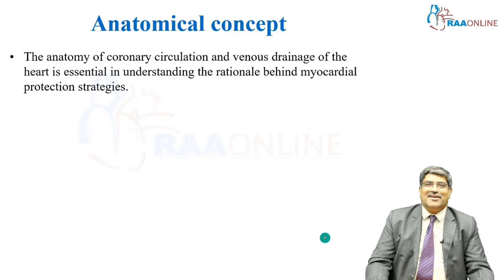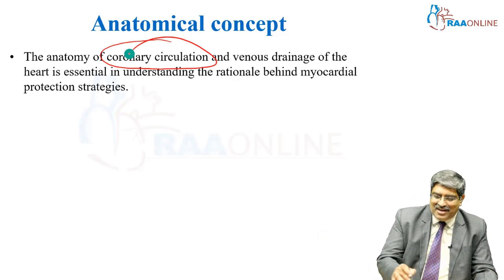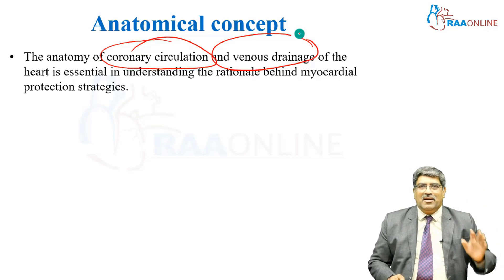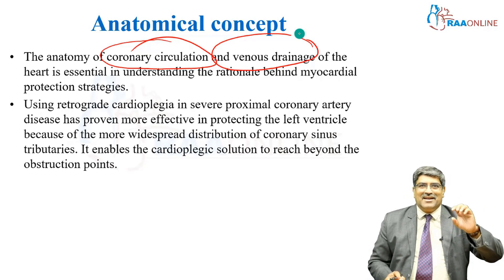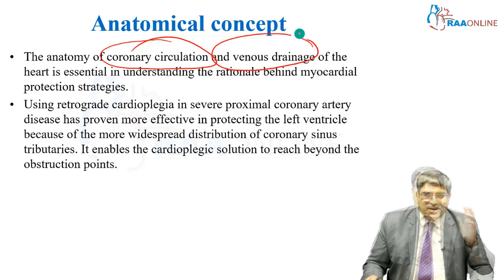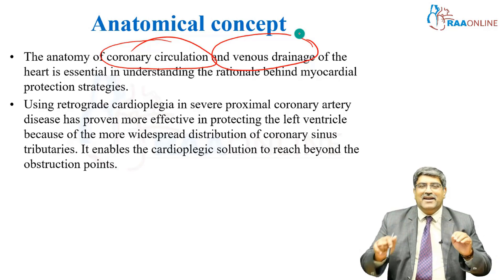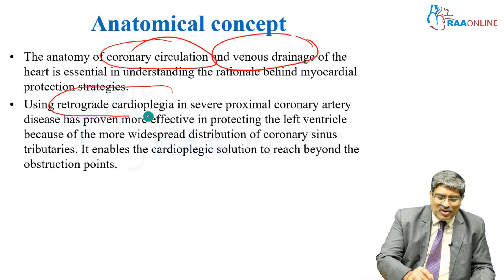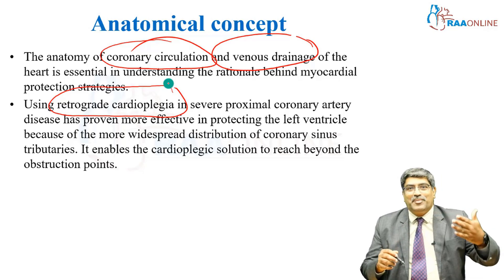Coming to the anatomical concept of where cardioplegia is delivered, the coronary arterial and venous drainage of the heart is very important. Normally, cardioplegia is given antegrade or retrograde. Usually it is given into the aortic root, where it flows into the coronary arteries and causes cardioplegic arrest. However, if the patient has coronary artery disease, antegrade delivery may not reach the myocardium due to obstruction. In those cases, retrograde cardioplegia must be given, enabling the solution to reach beyond the obstruction.